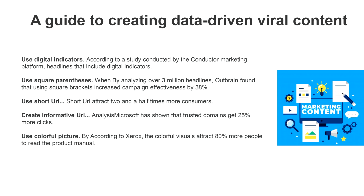Use digital metrics. According to a study conducted for the marketing platform Conductor, headlines that include digital metrics generate 36% more clicks than text-based headlines. An analysis of 150,000 titles shows that an ad campaign using odd numbers in the title is 20% more effective than an even one.